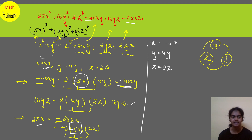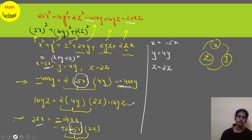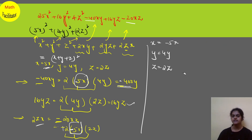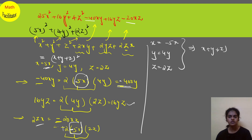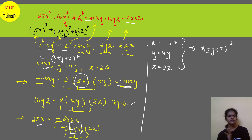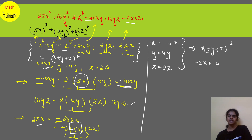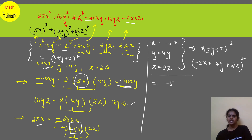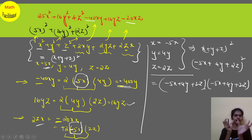Once you get these values, this formula is nothing but x plus y plus z whole square. So substituting: this equals minus 5x plus 4y plus 2z, whole square. That is equal to minus 5x plus 4y plus 2z, multiplied by minus 5x plus 4y plus 2z — since it is a square, it is a times a.